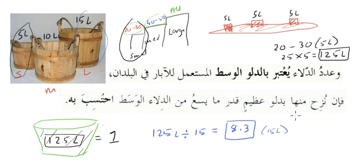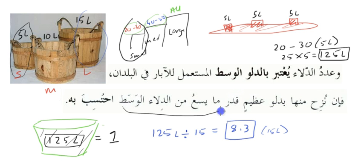Let's say someone had a really big bucket that could hold one hundred and twenty-five litres — then you would only need one bucket. So to translate: the number of buckets considered are the medium-sized buckets used in the wells of the city. If the required amount can be removed via a large bucket, it is calculated accordingly — eight point three large buckets suffices.